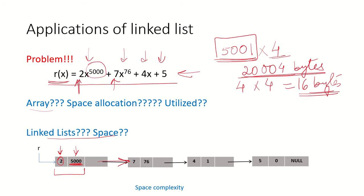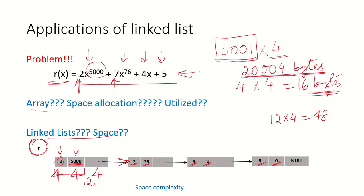The next term has coefficient 7 and exponent 76, and then 5 with x to the power of 0. How much space is used with a linked list? 4 bytes for the coefficient, 4 bytes for the exponent, and 4 bytes for the pointer to the next node — that is 12 bytes per node. With 4 nodes that is 12 times 4 which equals 48 bytes, plus 4 bytes for the head pointer, giving 52 bytes total.